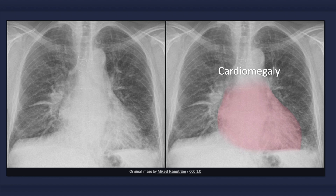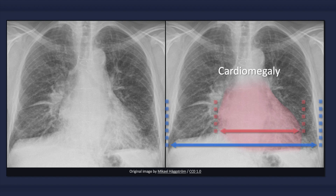Cardiomegaly, particularly in concert with other findings, is a suggestive feature of congestive heart failure. However, keep in mind that congestive heart failure can occur in the presence of a normal-sized heart. Cardiomegaly is said to be present when the cardiothoracic ratio is greater than 0.5 — that is, when the largest transverse distance between the left and right heart borders of the cardiac silhouette is greater than half the width of the thorax. In this image, the cardiothoracic ratio is approximately 0.6.